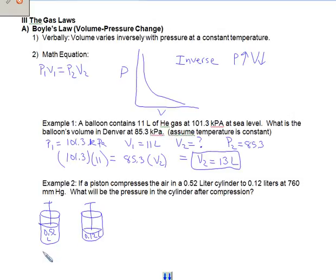Now we only have 0.12 liters. So we've pushed the piston down. We know that our pressure here is 760 millimeters of mercury. And it says what will be the pressure in the cylinder, and so here we're trying to figure out how many millimeters of mercury we have.